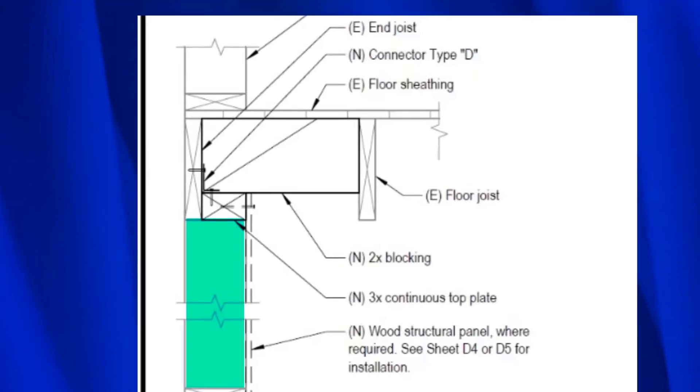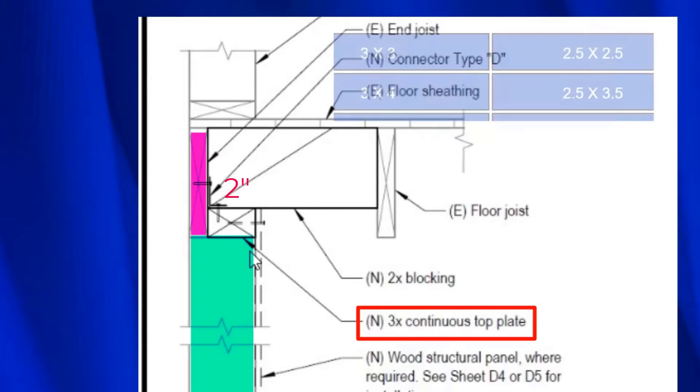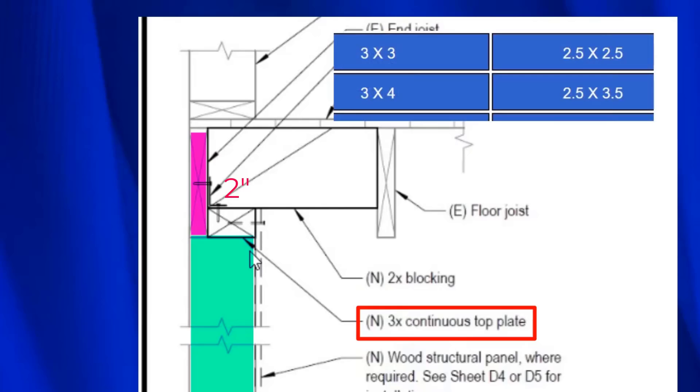This joist would be two inches wide, which leaves a gap of two inches between the joist and the edge of the stud. This detail requires that a three-by continuous top plate be installed, but if you look at this table, there is no dimension in three-by lumber that equals two inches.